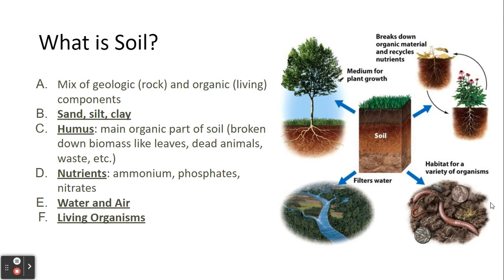We'll talk a little bit more about what those are later on. It's a mix of humus, which is the organic part of soil — that can be anything from broken down biomass like leaves, dead animals, or waste. We know it also has nutrients such as ammonium, phosphates, or nitrates. We can find water as well as a mixture of carbon dioxide and oxygen from the air found mixed within the soil, and living organisms.